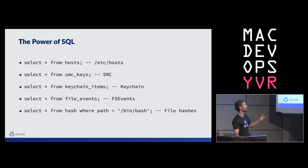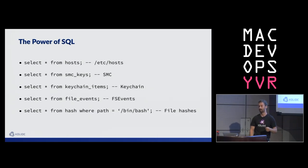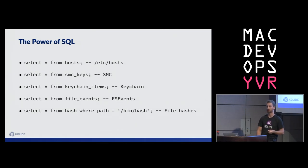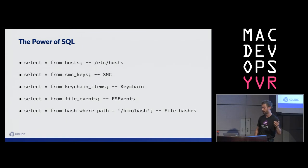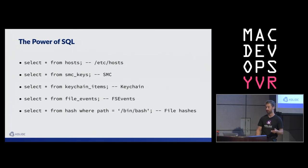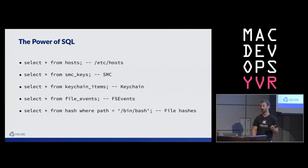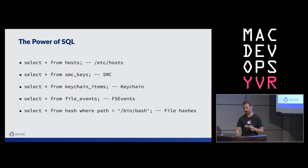This is just an example of how we might query some of these various sources. We're getting at data from a variety of sources that would require a pretty different approach if we were scripting. When we get the host information, we're parsing the /etc/hosts file, or hitting the SMC APIs or the keychain APIs. This stuff is all unified into one SQL interface, and I do literally mean SQL — it's the SQLite query language, so you have the full power of SQLite at your fingertips.